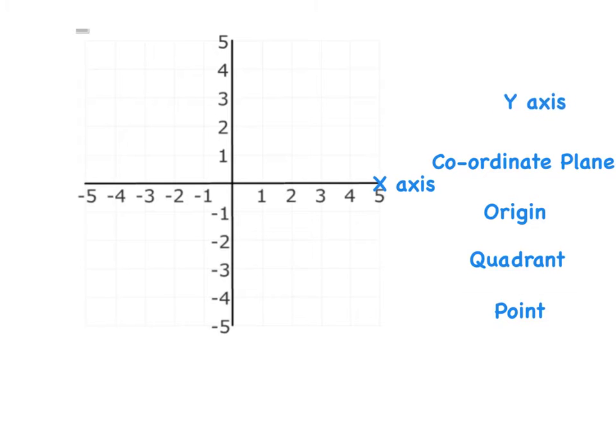The next one is the Y axis. And on every graph I draw, the Y axis is the vertical one. And I always try and remember, do you see the way there's a little bit of a straight line in the Y? So that that's the straight line here. The coordinate plane, well this actually, this whole grid is called the coordinate plane.